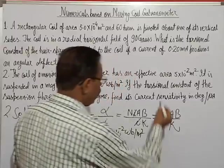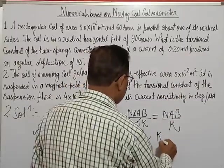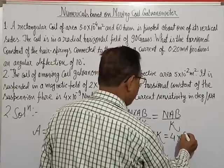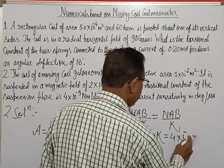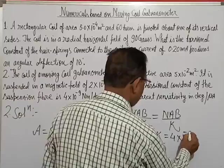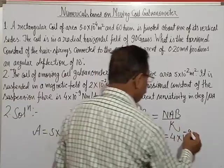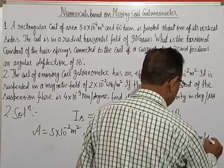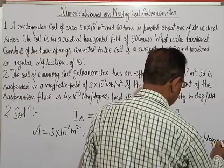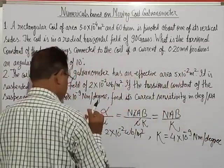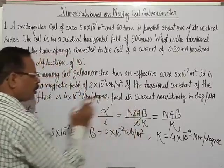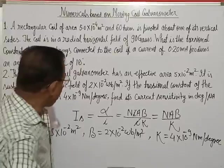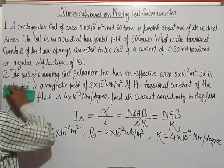Torsional constant कितना दिया है? K की value दिया है हमारा 4×10⁻⁹ newton meter per degree। अब इन सारे values को formula में substitute कर देना है। Question number two को हम मिटा देते हैं क्योंकि सारे factors नोट कर लिए हैं।